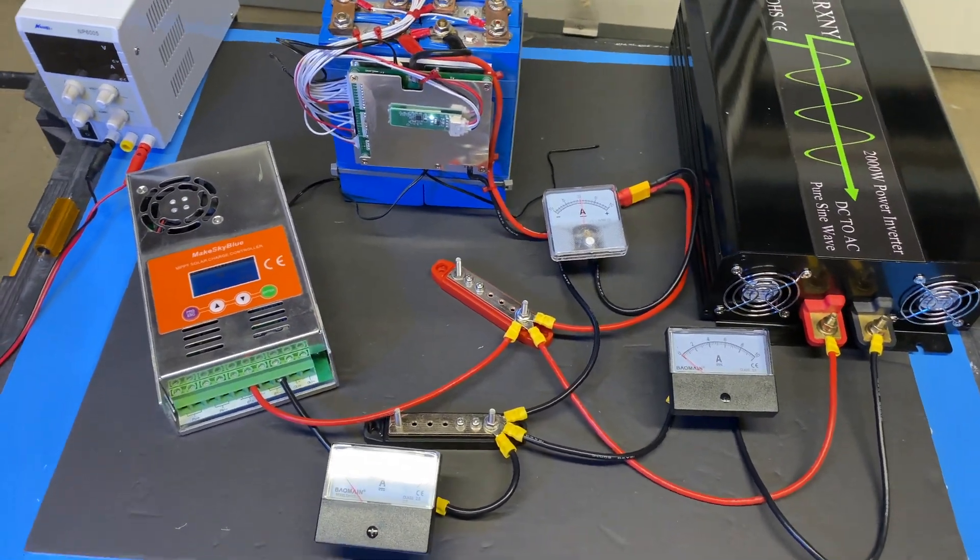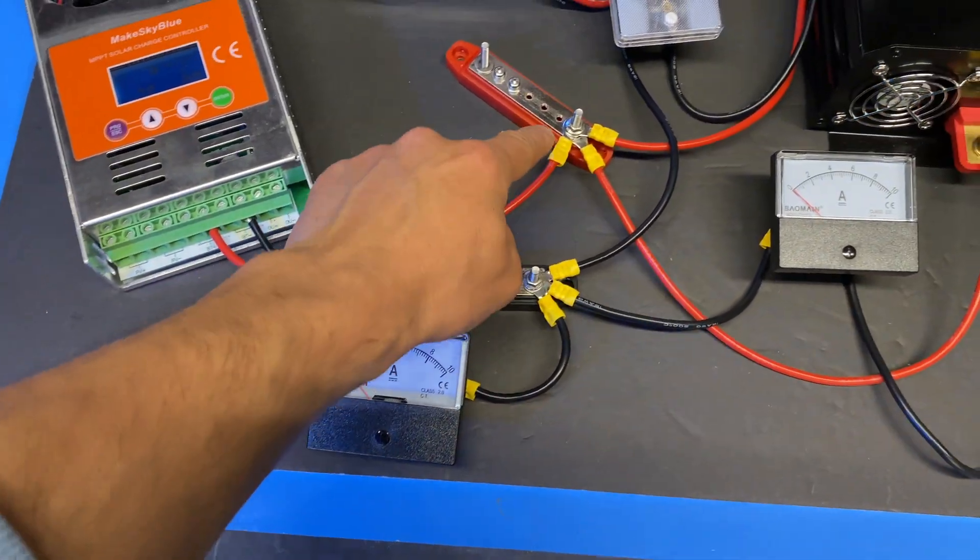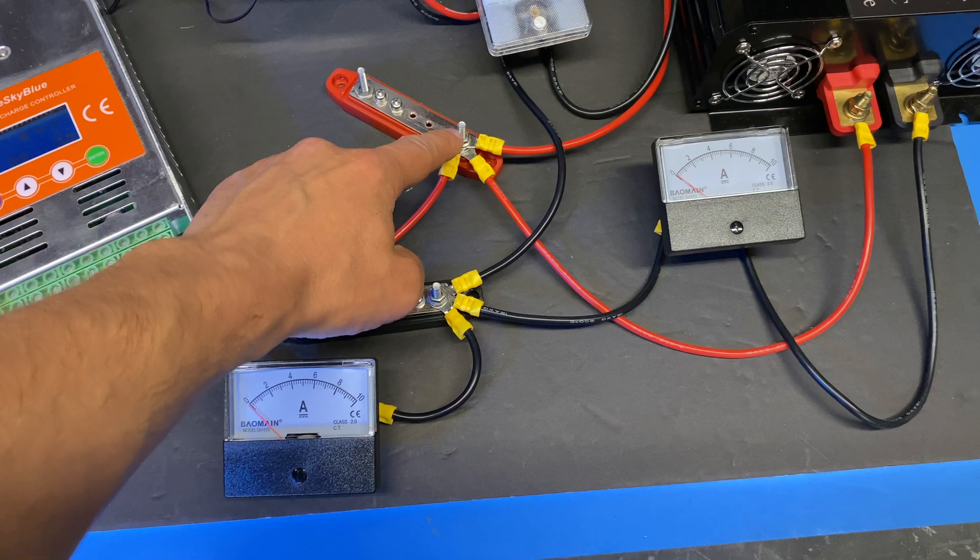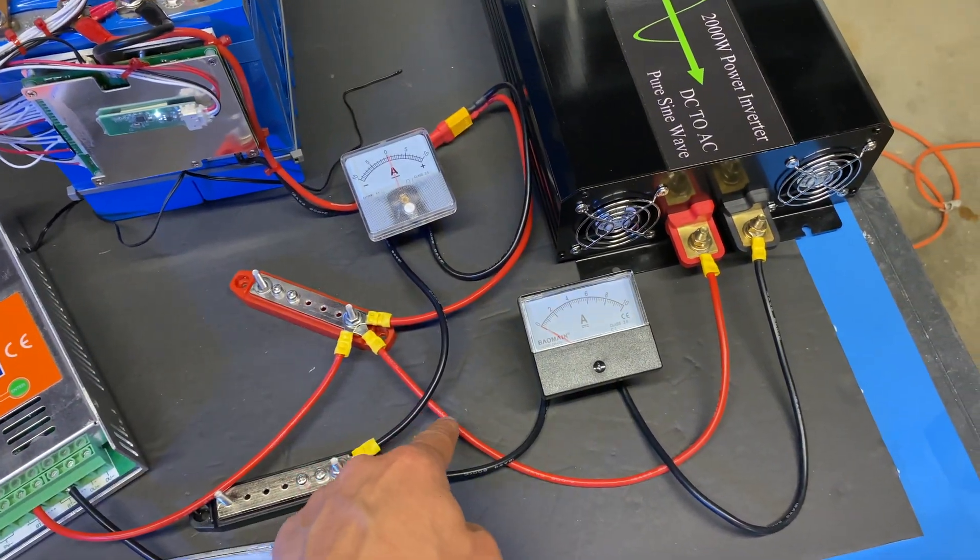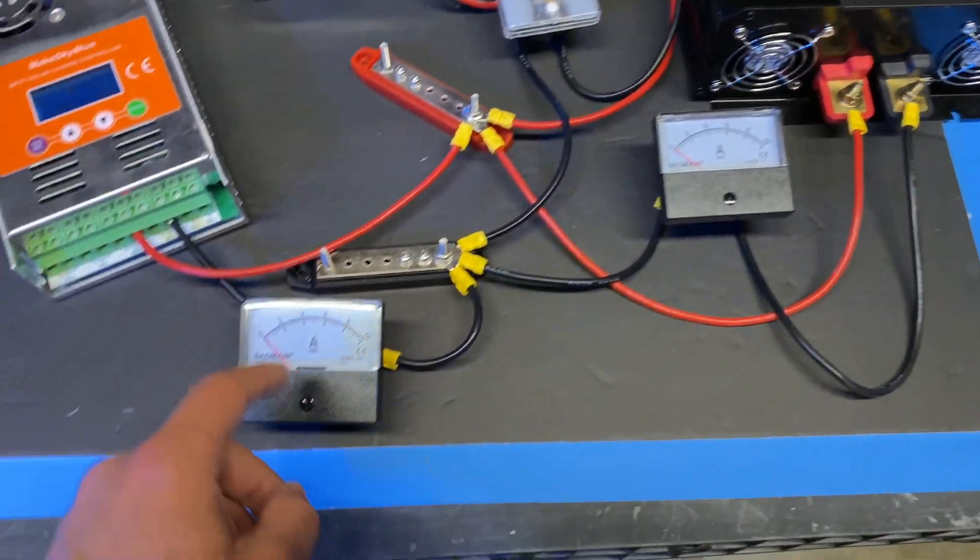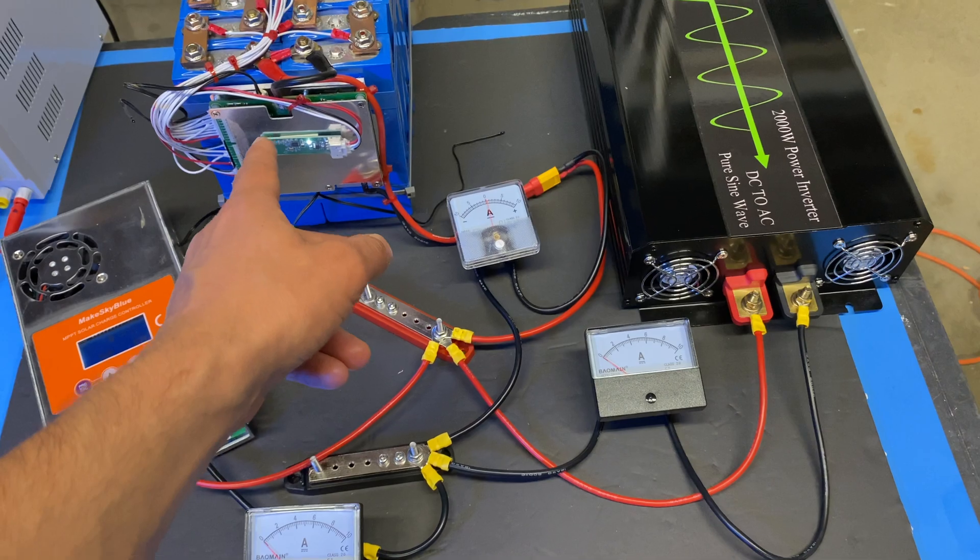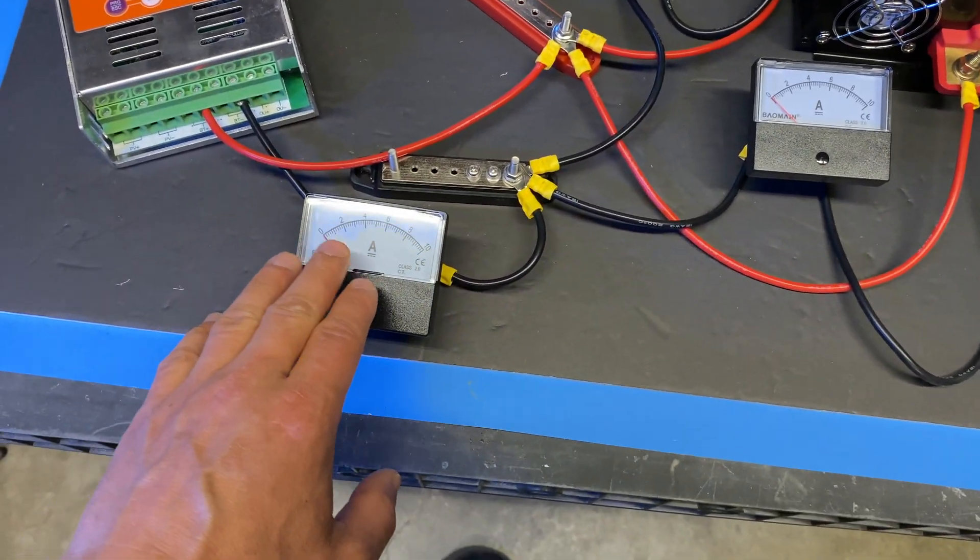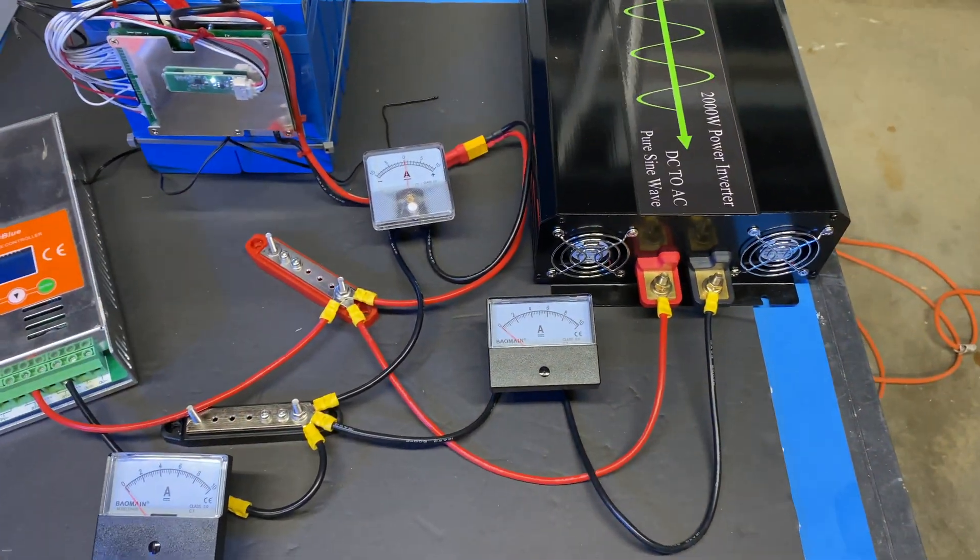So all components are connected together. We can see from the MPPT charge controller positive is going to one post on the bus bar, and from the same post, one positive is going to the battery and the second positive wire is going to the inverter. Same for the negatives, we're going to one post right here and we're going to the battery and inverter. I set up amp meters on the negative side so we'll see how amps are flowing in our system.